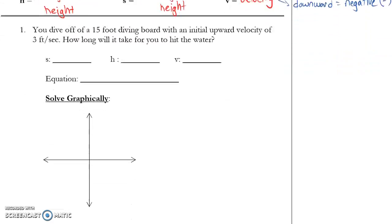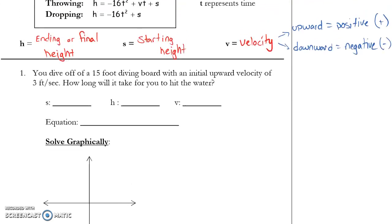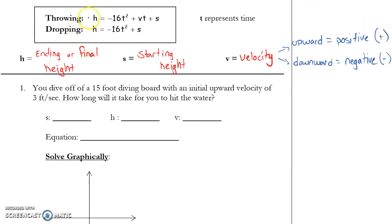Let's do a couple examples together here. You dive off of a 15-foot diving board with an initial upward velocity of 3 feet per second. How long will it take for you to hit the water? For all of these equations and all of these vertical motion models, we're looking to determine first is this a throwing problem or a dropping problem? The only difference being a throwing problem has a velocity, a dropping problem doesn't. That's us or an outside object providing an outside force, the velocity, to this object.